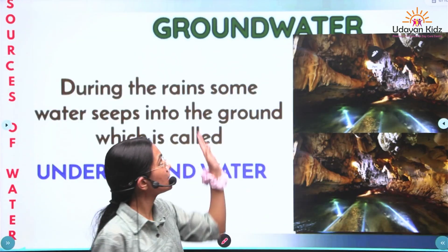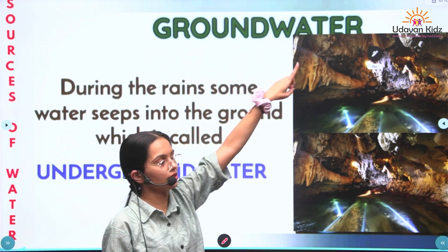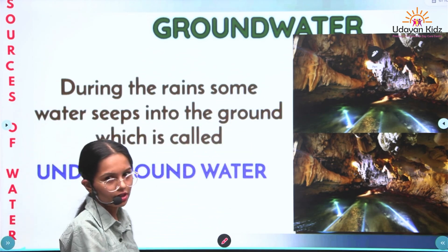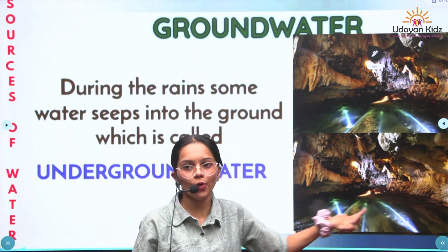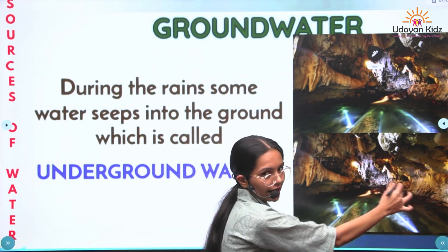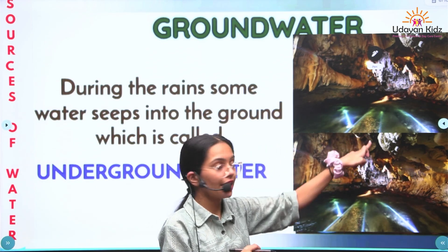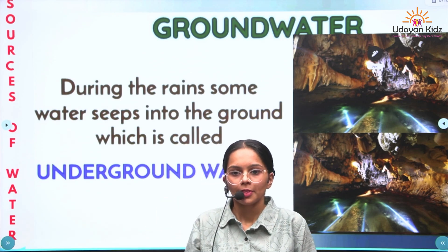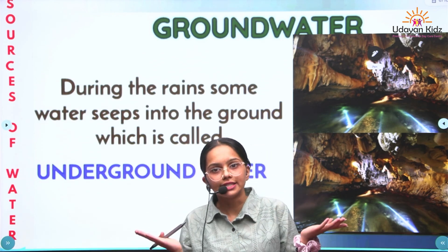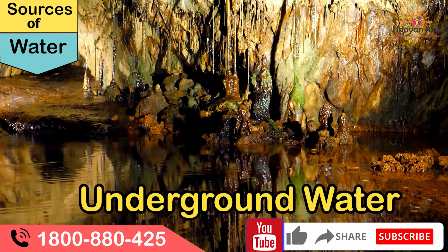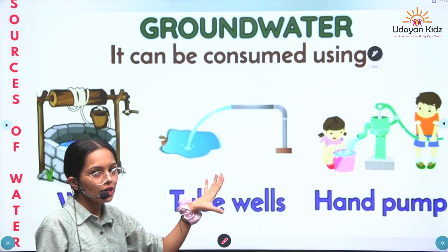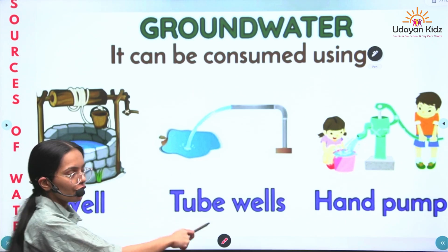It is crucial for sustained ecosystem, agriculture, industry and human consumption. Third one is ground water. During the rains, some water seeps into the ground, which is ground water. Ground water is water found underground in the space between rock and soil. It comes from rain and snow that soaks into the ground, and it is an important source of water for drinking, farming and other needs. This is ground water, and this is manmade sources of water like well, tube wells and hand pump.